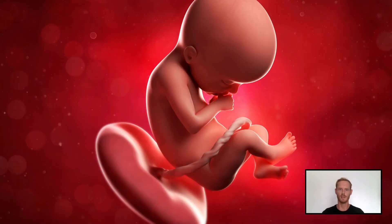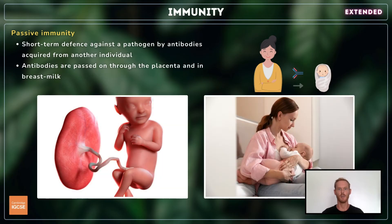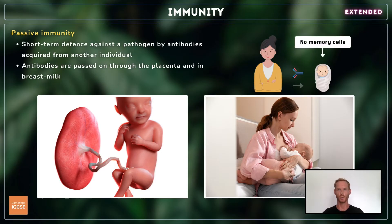Passive immunity is a short-term defence against a pathogen by antibodies acquired from another individual. Newborn babies haven't had the time to build up an active immunity, so instead receive antibodies from the mother. Antibodies are passed on in the last three months of pregnancy through the placenta, and after the baby is born, in breast milk. This protects infants while their own immune systems are developing, but it only provides short-term protection as no memory cells are produced.